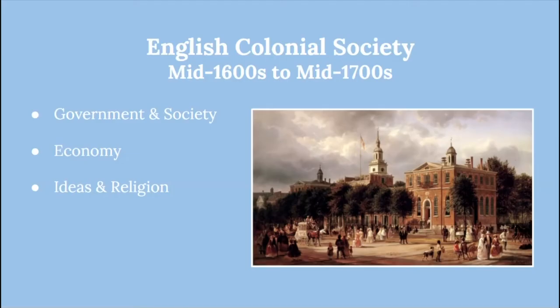We're going to cover English colonial society — I'm not calling it American colonial society yet because people who would become Americans are not yet calling themselves Americans. We're going to cover it in three broad categories: first, government and society generally; second, the economy and how it developed; and third, the ideas — the mental picture that defined colonial life, covering philosophical ideas but also religion.